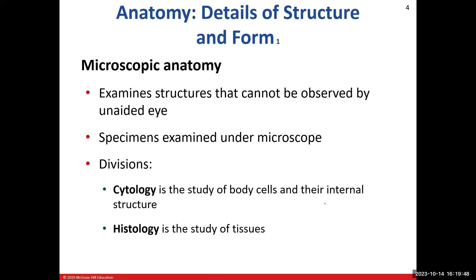We use the scientific method quite often. Let's get into some of the different types of anatomy. Microscopic anatomy is a field of anatomy in which we study structures we cannot see with our unaided eye — you'll need some sort of microscope, whether electron microscopes, light microscopes, or 3D microscopes. There are two divisions that make up microscopic anatomy: the study of body cells, which we call cytology, and then the study of tissues, which we call histology. Microscopic anatomy has those two divisions — cytology and histology.